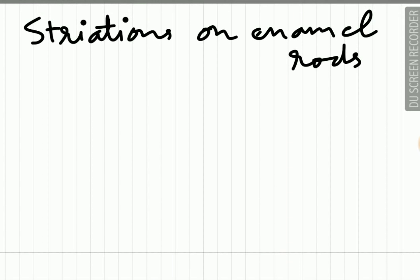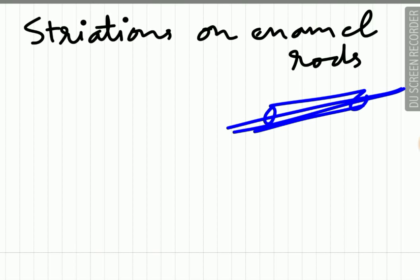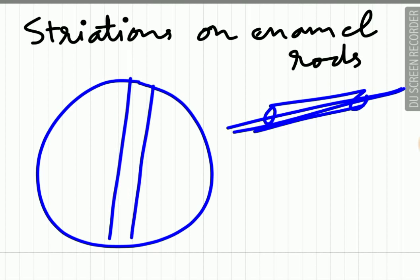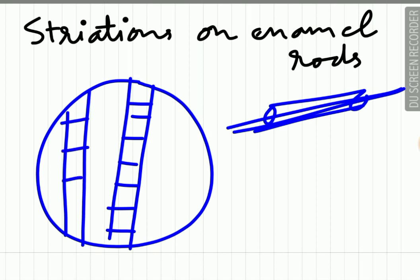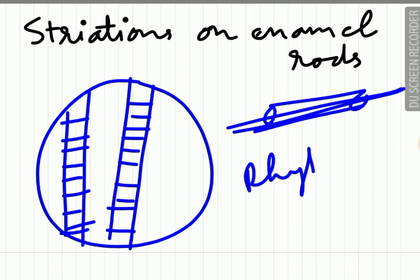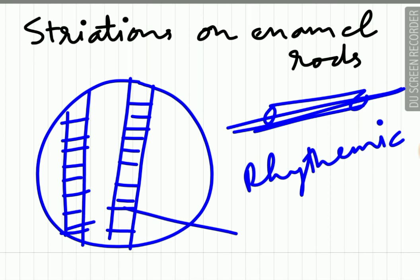If the enamel rods are cut longitudinally along their length and viewed under ground section, we can appreciate that there are striations present on the enamel rods at an average distance of 4 microns from each other. These striations represent the rhythmic pattern of enamel formation. There is also diurnal variation in enamel deposition — the rate is different in the daytime and different at nighttime. These striations are more visible when the section is treated with acids.